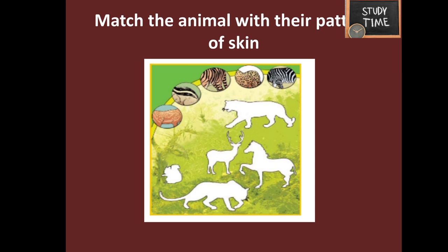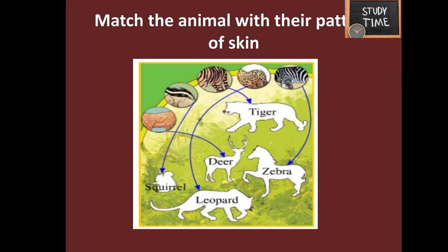The animals given are: squirrel, deer, zebra, tiger, and leopard. You can match their skin patterns and draw those skin patterns on the respective animals. I have matched them here for reference — you can draw on your textbook.